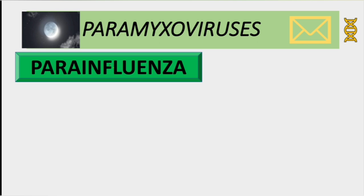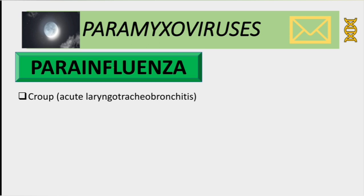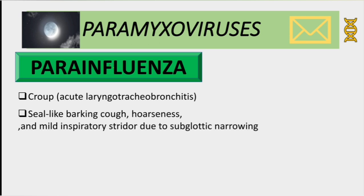Parainfluenza has four subgroups: parainfluenza 1, 2, 3, and 4. Parainfluenza 1 and 2 cause infections of the upper respiratory tract. Parainfluenza 3 causes infections of the lower respiratory tract. Parainfluenza 4 is very rare and causes only mild respiratory symptoms. Parainfluenza causes a disease called croup, also known as acute laryngotracheal bronchitis, characterized by a seal-like barking cough with hoarseness and mild inspiratory stridor due to subglottic narrowing.